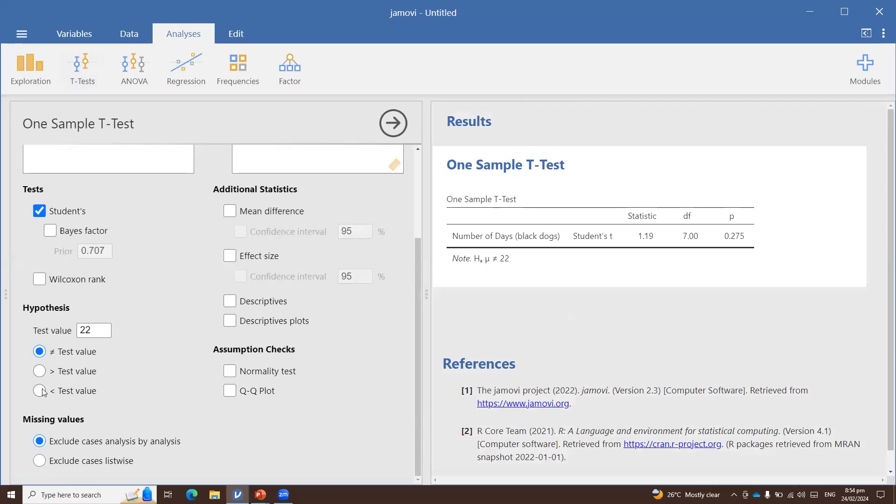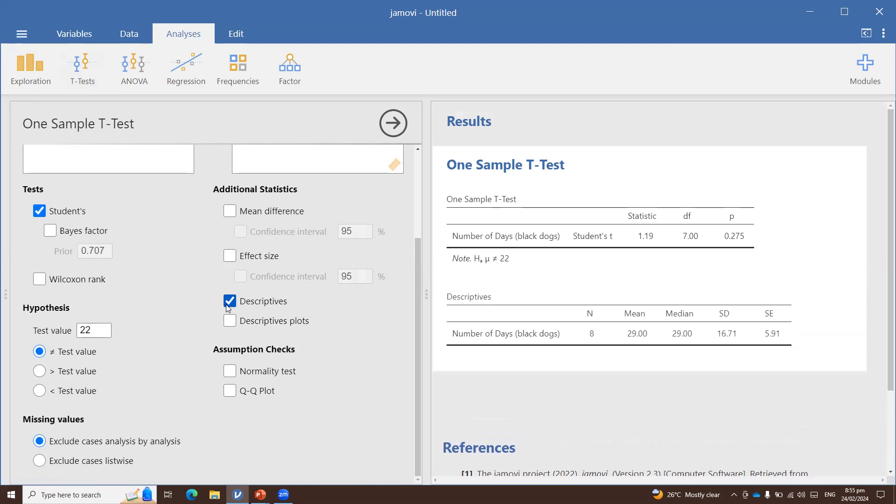In this case, let me just select the first one, since we are testing a two-tailed hypothesis. And then let me also check on descriptives for me to know the mean value of the sample.